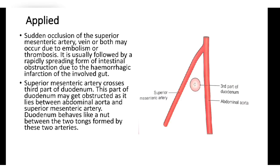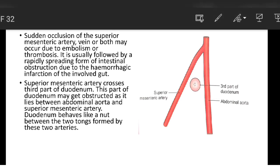Clinical anatomy: sudden occlusion of the superior mesenteric artery, vein, or both may occur due to embolism or thrombosis. It is usually followed by rapidly spreading intestinal obstruction due to hemorrhagic infarction of the involved gut. The superior mesenteric artery crosses the third part of the duodenum, which may get obstructed as it lies between the abdominal aorta and the superior mesenteric artery — the duodenum behaves like a nut between two tongs formed by these two vessels.